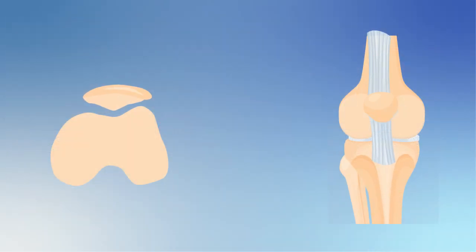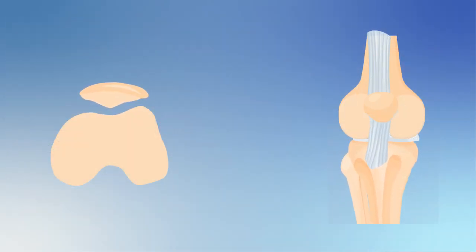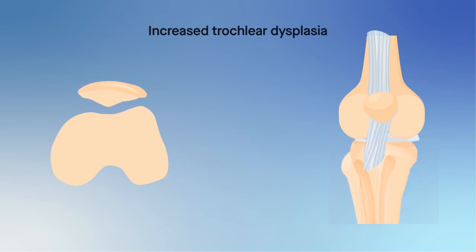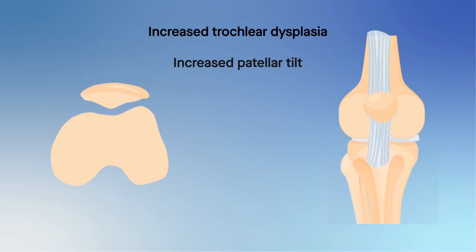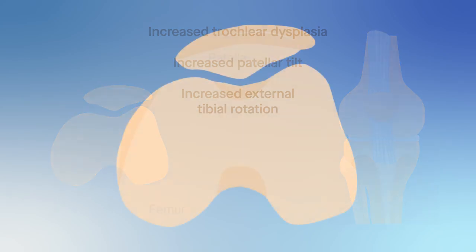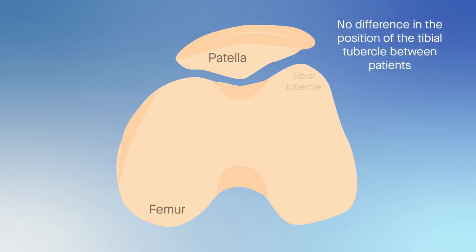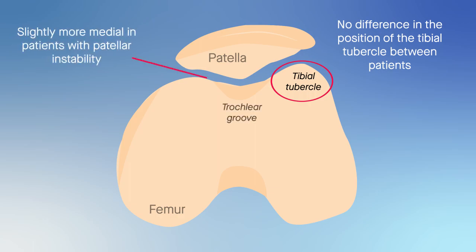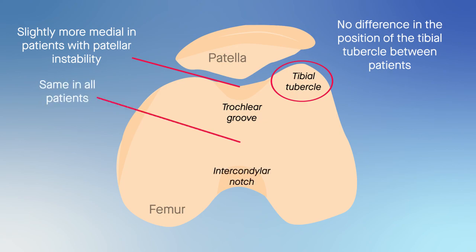These findings paint a more nuanced picture of the processes leading to patellar instability. The researchers proposed that increasing degrees of trochlear dysplasia lead to increased patellar tilt, which, through the patellar tendon, causes the tibia to rotate externally. The team also found no difference in the position of the tibial tubercle between patients with and without patellar instability, and the trochlear groove was slightly more medial at the top of the trochlea, but was basically the same at the bottom of the trochlea, close to the intercondylar notch.